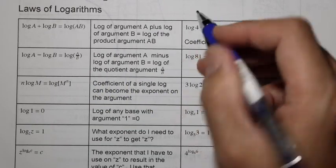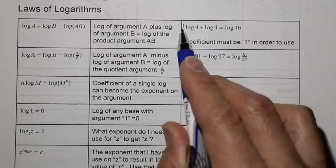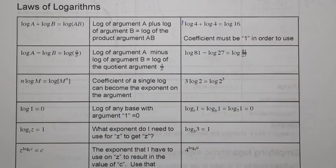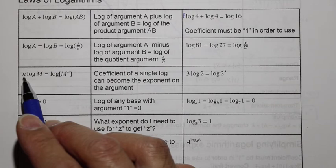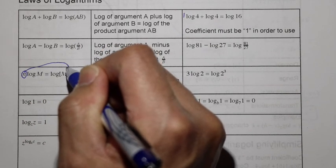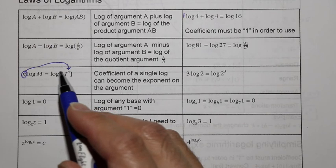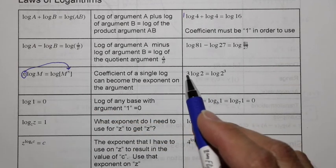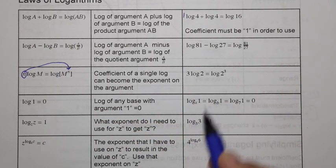For example, this has to be 1 log 4. If this was 2 log 4, we'd have to either split it or use a different rule. The power rule here is this coefficient of the log can become now the exponent inside the argument. The coefficient of the single log here can become the exponent in this argument. So here's the example: 3 log 2 = log(2^3).